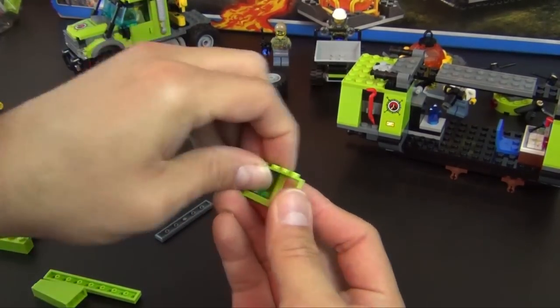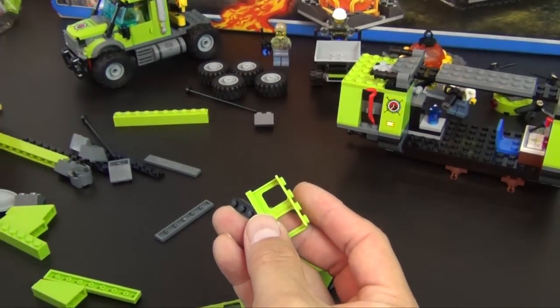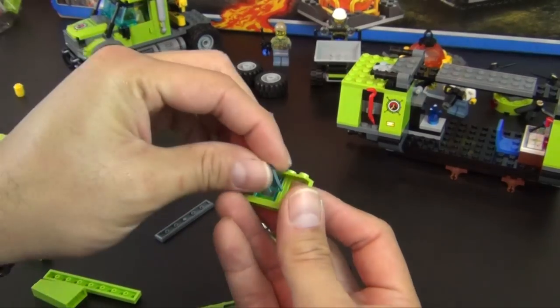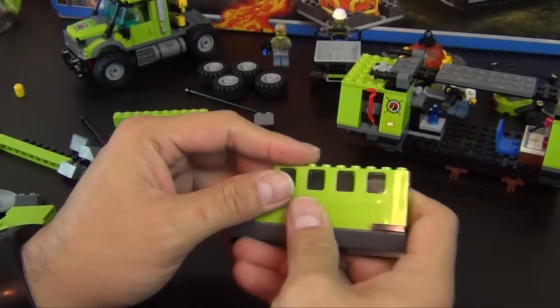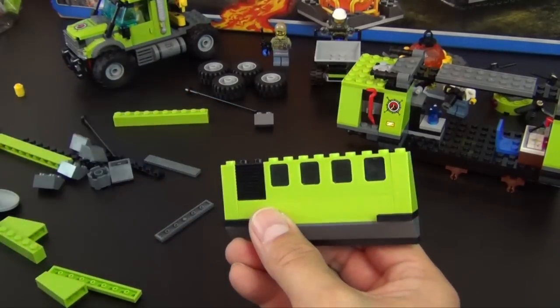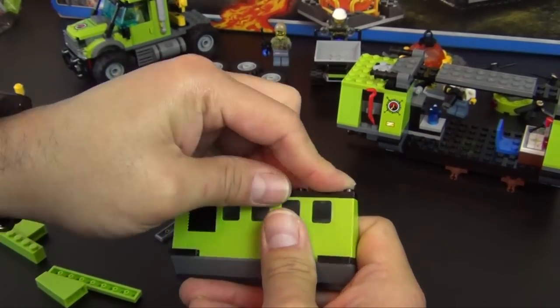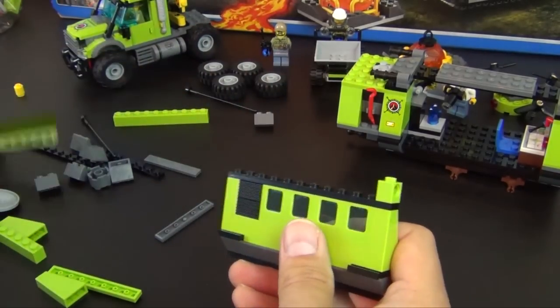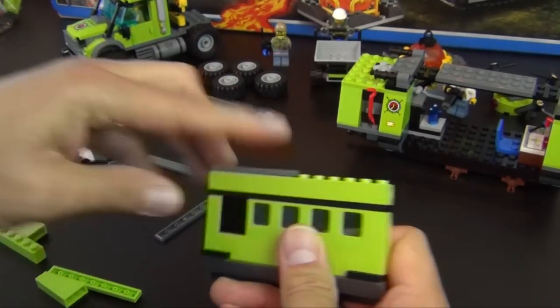We have a sloped brick, a regular brick, two of these window pieces. Put this trans light blue glass piece in there - it's not really glass it's plastic but it's supposed to represent the window glass. One more plate on top, a one by one technic brick that has that hole in it. Another brick, another technic brick, and two tiles.